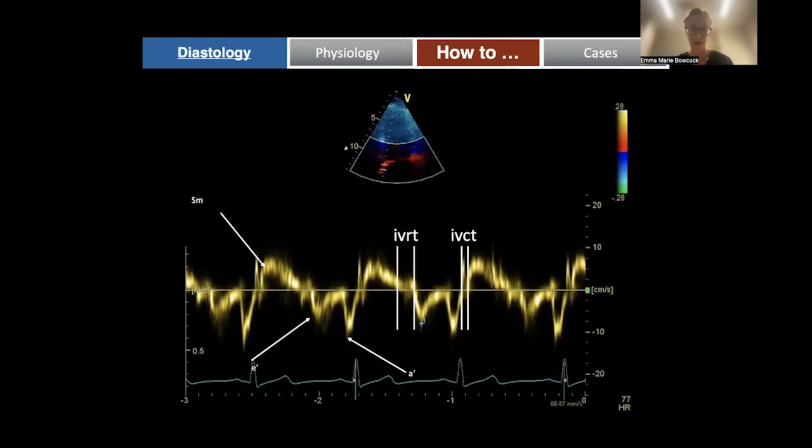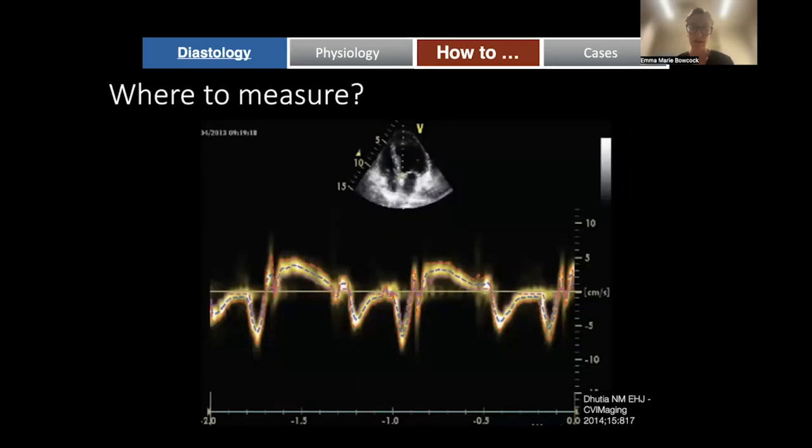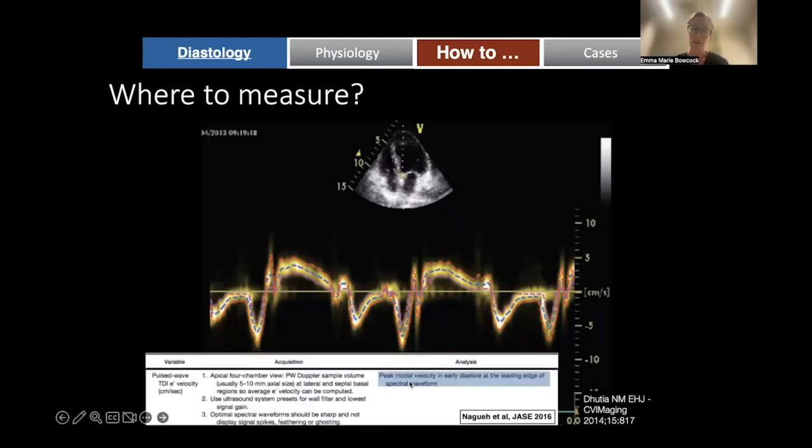So where to measure it? You want to make sure you haven't got too much feathering, so you turn your gain down. For your E-wave, which is really the only one we measure mostly, you want to measure on the outer aspect of this bright tracing. That's what's recommended in the guidelines. We call that the peak modal velocity at the leading edge of the spectral waveform.